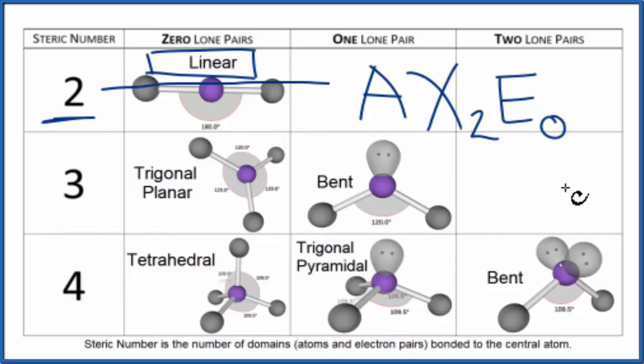Sometimes you'll just see a zero here. We could have memorized that AX2 is linear, or look it up on a table. But we'd find out that the molecular geometry for the azide ion, N3-, is linear.